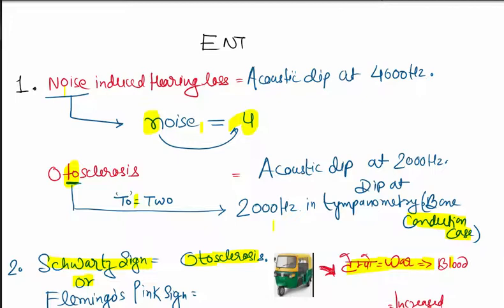Hello friends, let's revise ENT, mainly otosclerosis. First point: noise-induced hearing loss shows acoustic dip at 4000 Hertz. How to remember? Write 'and' small - if we flip it, we get 4, so 4000 Hertz acoustic dip at 4000 Hertz is found in noise-induced hearing loss.